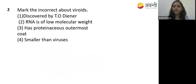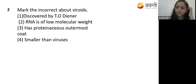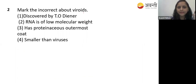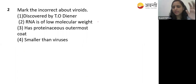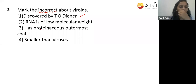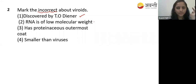Next question: mark the incorrect statement about viroids, from the biological classification chapter. Option one - discovered by T.O. Diener - yes, correct. They are asking for the incorrect statement. Option two - RNA is of low molecular weight - yes, that is also correct.